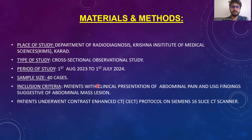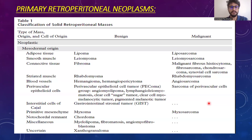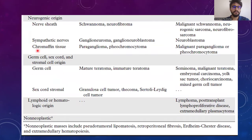Inclusion criteria includes patients with clinical presentation of abdominal pain and USG findings suggestive of abdominal mass lesion. Patients underwent contrast-enhanced CT protocol on a Siemens 16-slice CT scanner. There are three types of primary retroperitoneal neoplasms arising from mesodermal origin, neurogenic origin, and germ cell sex cord origin.